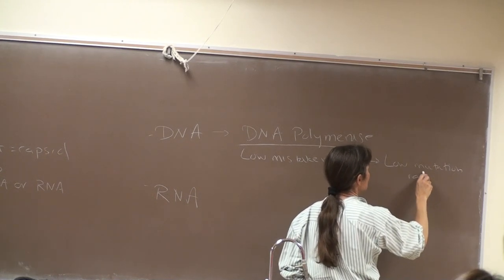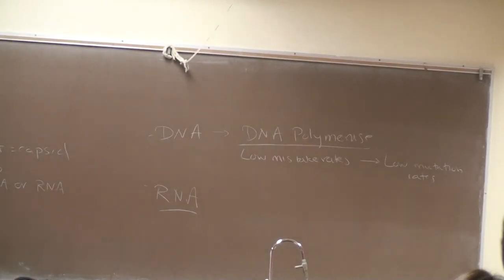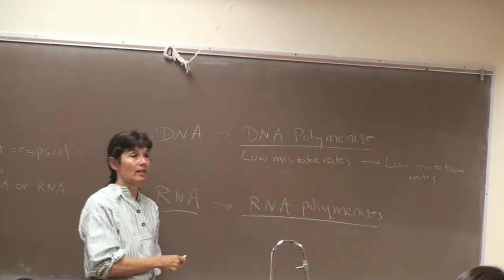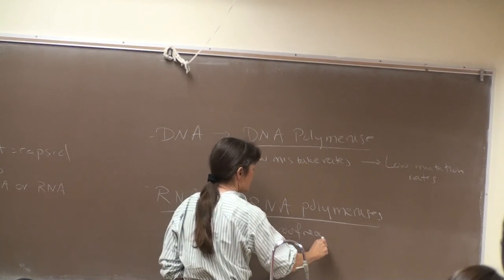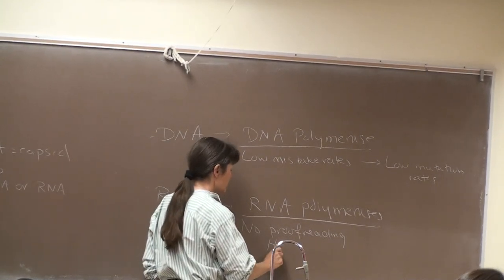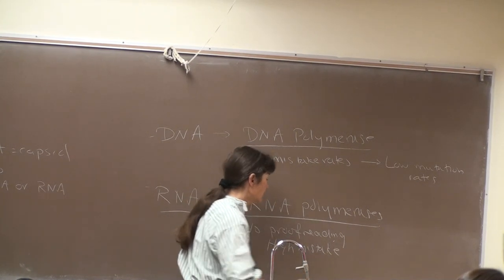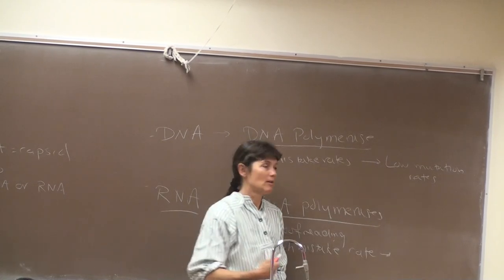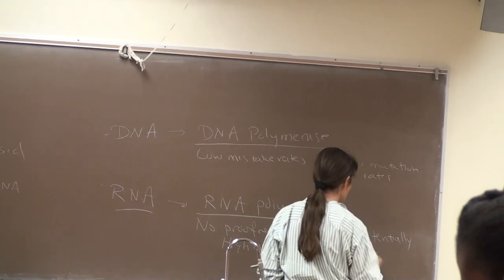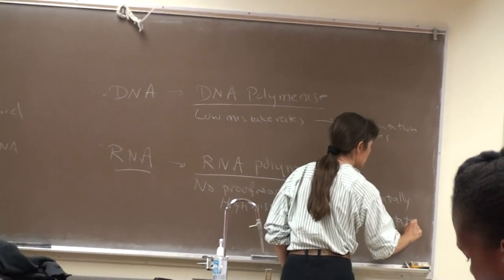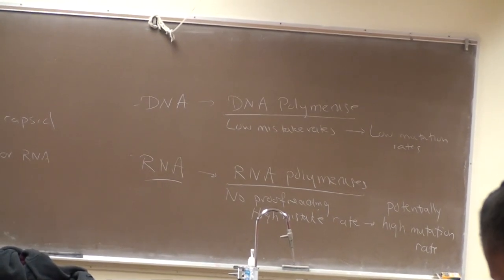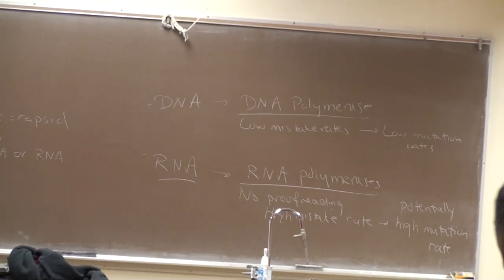In contrast, RNA viruses — which enzymes synthesize RNA? RNA polymerases. And RNA polymerases have no proofreading ability, so there's no proofreading, meaning a high mistake rate and high potential for mutations. RNA viruses have the potential to mutate rapidly. This high mutation rate is probably why there's greater diversity amongst RNA viruses — 15 RNA virus families compared to 7 DNA virus families. We never want to forget the potential for high mutation rate of RNA viruses.